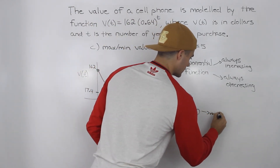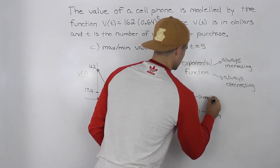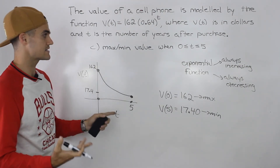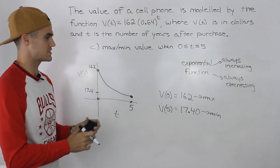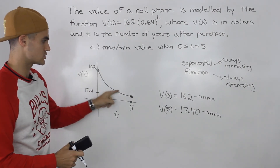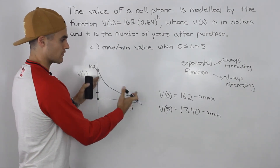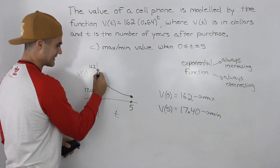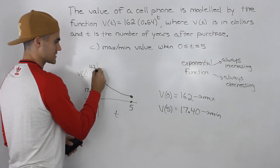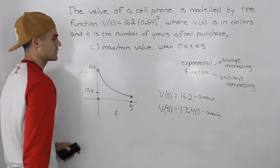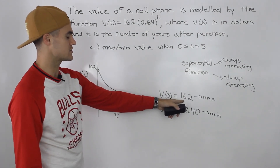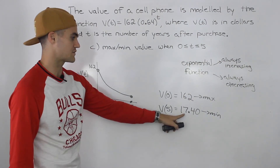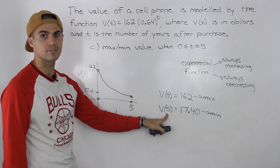The minimum value is $17.40 and the maximum value is $162. Since it's an exponential function that's always decreasing, over any interval the max and min are always going to be the endpoints. So the max value is $162, which occurs at zero years, and the min value is $17.40, which occurs at the five-year mark.